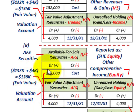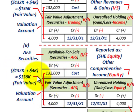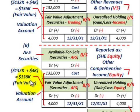Total cost is $132,000, plus the fair value adjustment of $4,000, giving us the fair value of $136,000 — the same figure we're reporting for available-for-sale securities.